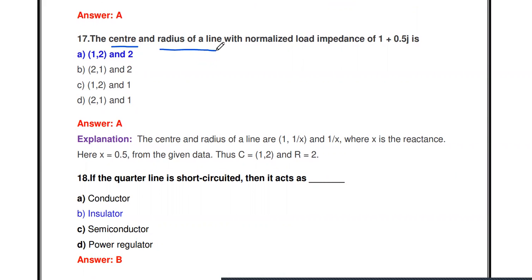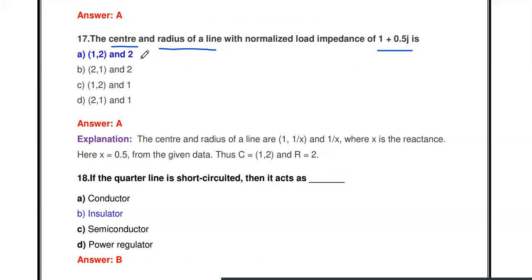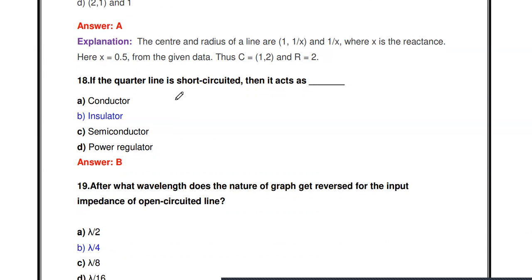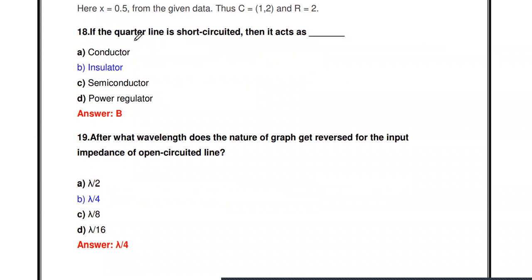Next question: The center and radius of a line with normalized load impedance of 1 + 0.5j is what? The center point is (1, 1/x) where x is the reactance value. Substituting x = 0.5: 1 divided by 0.5 equals 2, so the center point is (1, 2). The radius r equals 2. So the answer is center (1, 2) and radius 2.